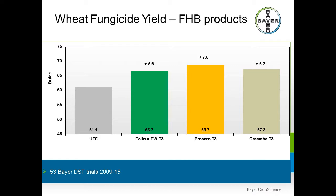In terms of the fungicide products — Folicur, Prosaro, and Caramba — they do vary in performance across the prairies. Looking at internal Bayer data over the last six years, you'll see varying levels of performance in terms of fusarium suppression, FDK and DON reduction, and corresponding yield protection. These products react differently, and especially when looking at price and programming, it starts to look like you get what you pay for — the more dollars you spend, the better protection you get. But there's a bigger ROI equation involving yield protection, quality protection, price of product, and any programming companies offer. Talk to your local salesperson or crop protection retailer for more detail.